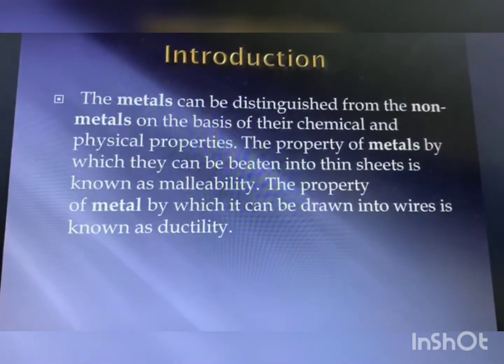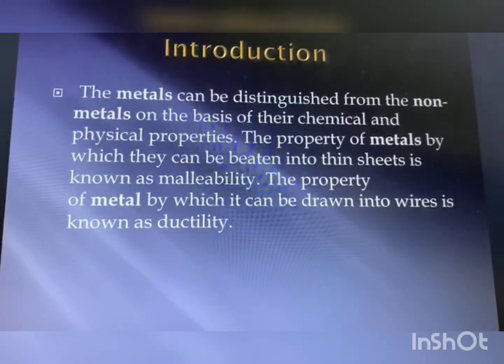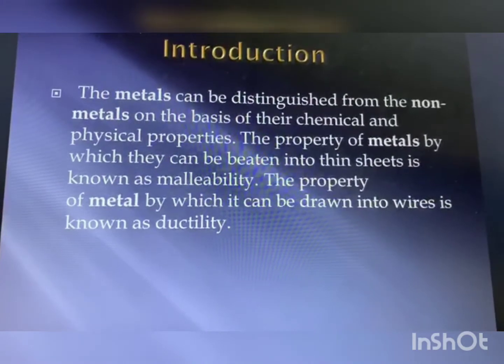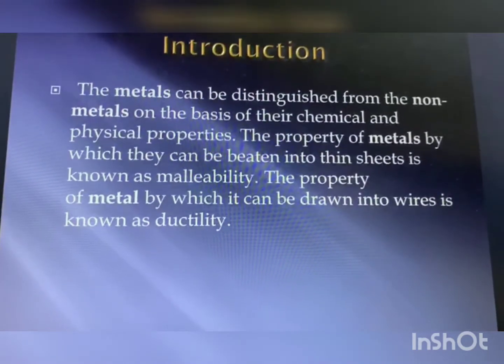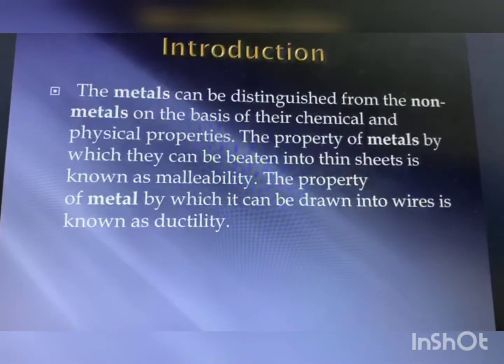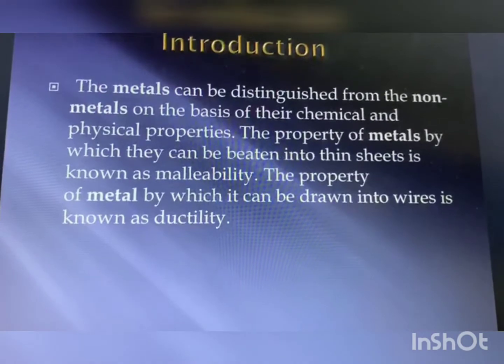The easiest way to start grouping substances is by comparing their physical properties — that means the physical properties of metals and nonmetals.